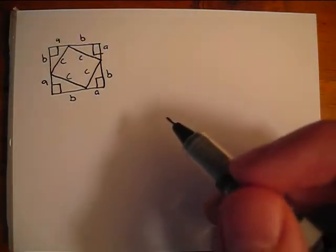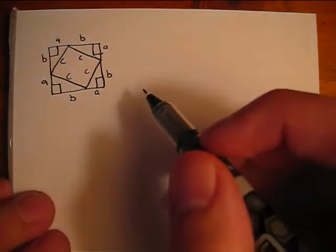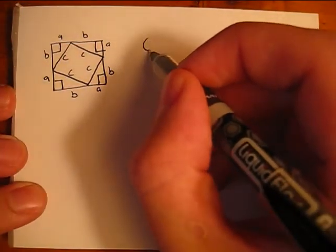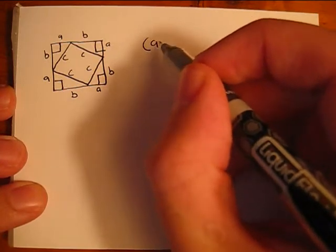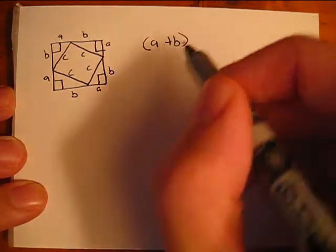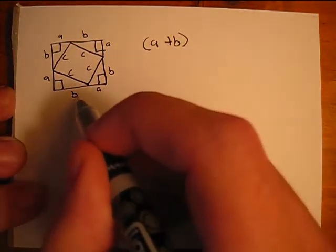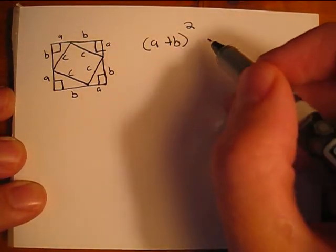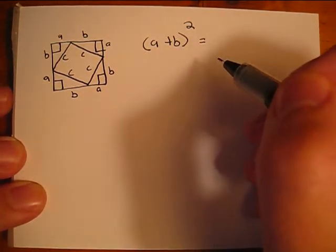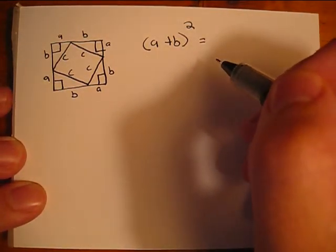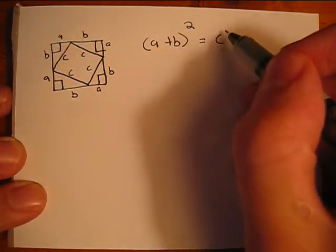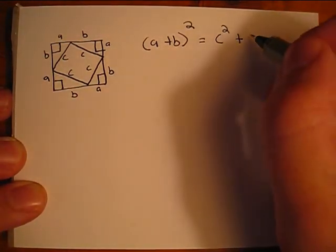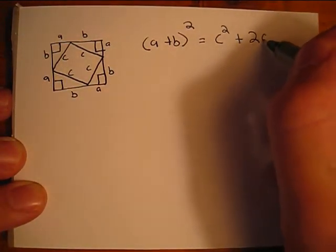To find the total area of this square, we would take the length of a plus b and square it. We can also express the area of this square as c squared plus 2ab.